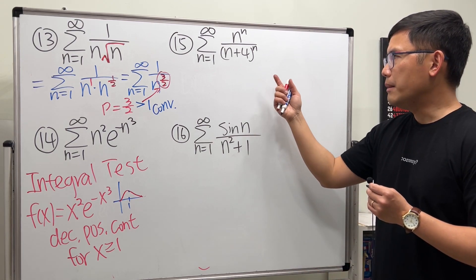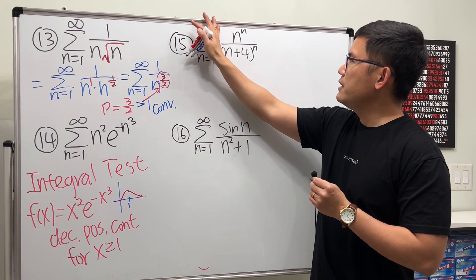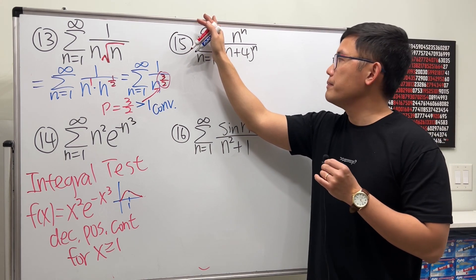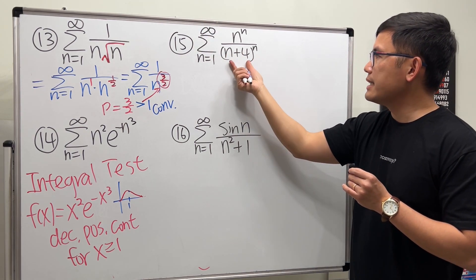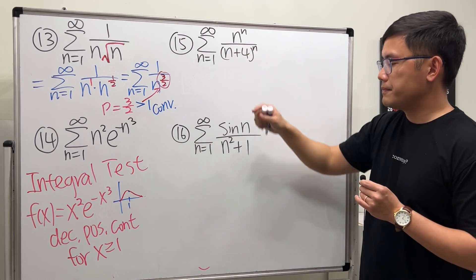All right, so for number 15, maybe we should just look at this expression and think about what would happen if n goes to infinity. By the way, though, because we have n plus 4 inside of the parentheses and then raised to the nth power, we cannot just say, in order...